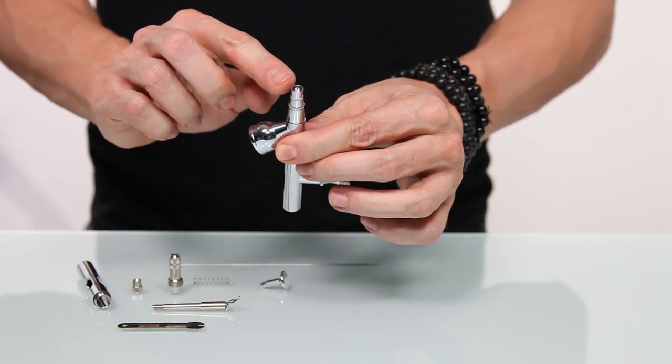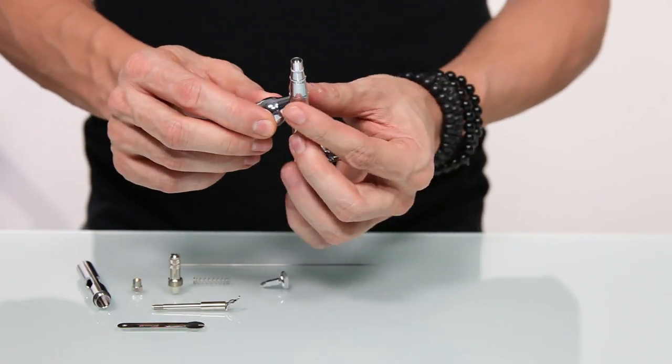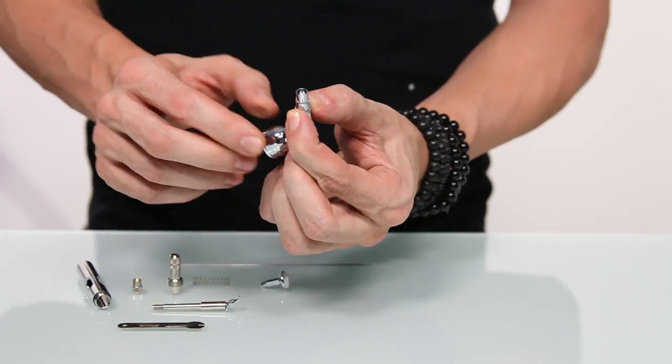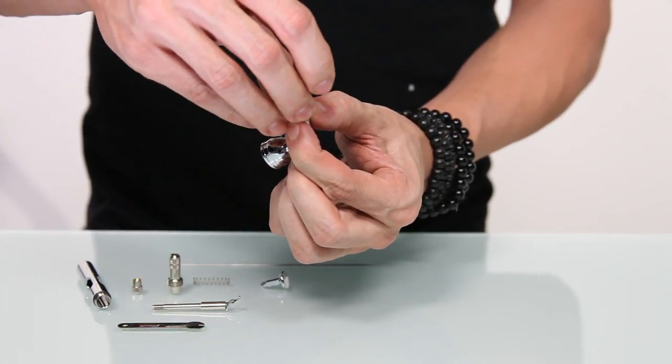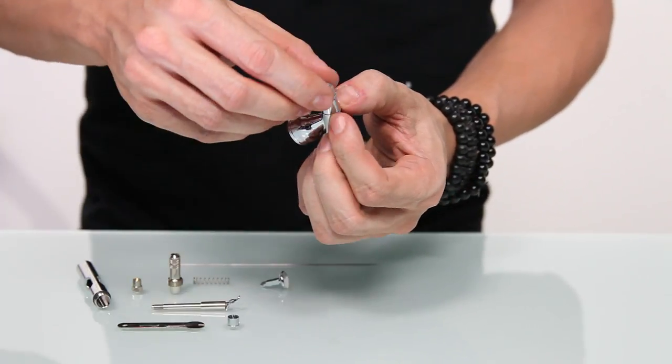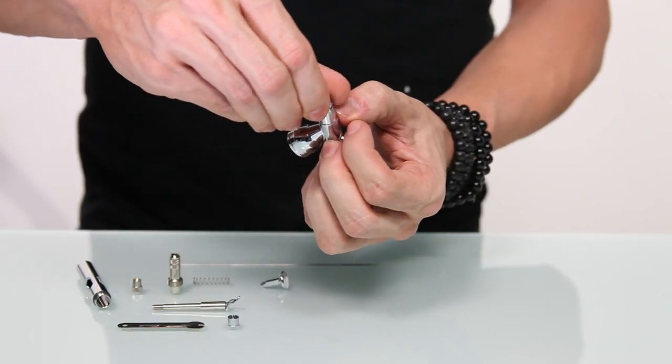Now at the front of the gun, you want to remove the needle cap and the nozzle cap. In order to do that, hold the grips of the nozzle cap and unscrew the needle cap. This will allow you to easily separate the two, and then you can remove the nozzle cap.